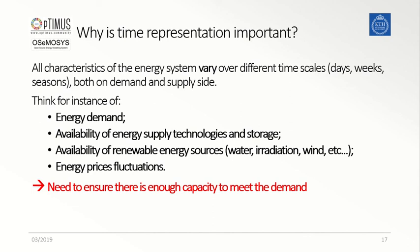In conclusion, the reason why it is important to focus on the time representation in a model is because different characteristics of both supply and demand sides of an energy system vary over different time frames — either days, weeks, seasons, or even decades. Some examples include the variability of energy demand, of renewable energy sources, of different supply technologies and their storage units such as hydro dams, or even primary resources depending on fuel prices. In order to ensure that the system is always able to reach a balance and satisfy the demand side, these variations should be carefully considered when planning the future development of an energy system.